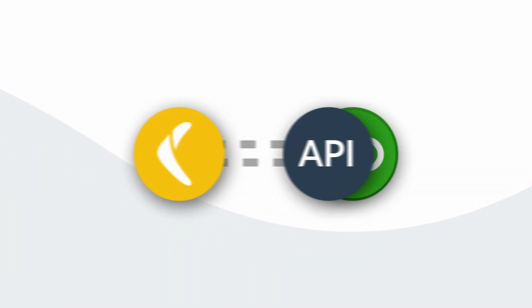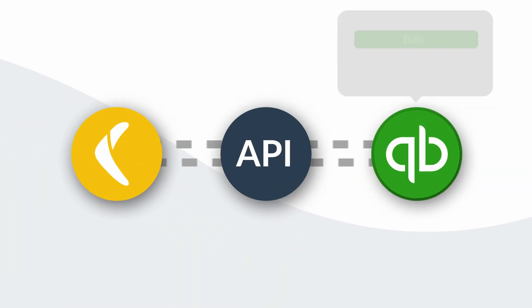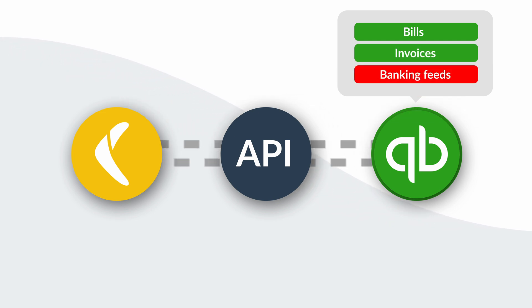However, those same API definitions can place limitations when attempting to restore data. Rewind is only able to access some of the data stored in Intuit, and only through very specific requirements. For example, Rewind cannot edit or alter data imported from bank feeds. To return to our previous metaphor, you wouldn't ask a waiter to deposit a check for you, or to call your doctor for test results — some information is just too sensitive to pass through certain channels.